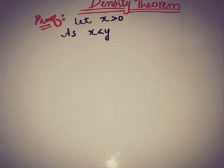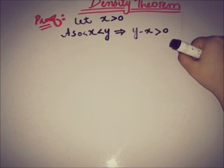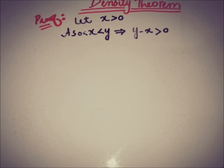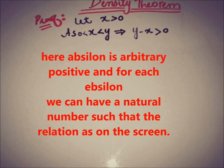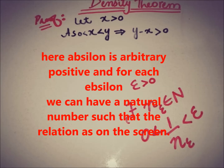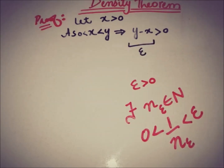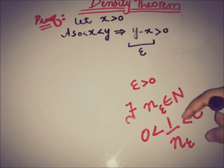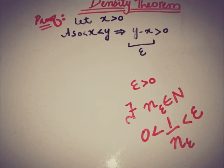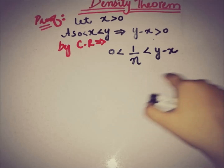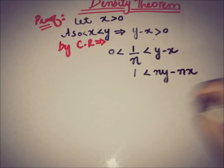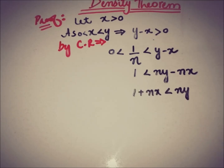As given, x is less than y. If x is greater than zero, then y minus x is greater than zero. It follows from the Archimedean property: consider epsilon equal to y minus x. There must exist a corresponding n such that 0 is less than 1/n, which is less than y minus x. Manipulating this gives 1 is less than n(y minus x), which can be written as 1 plus nx is less than ny.